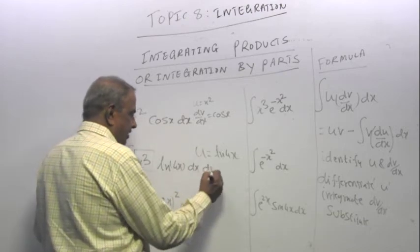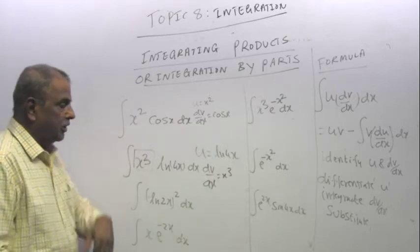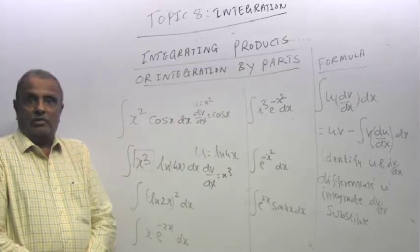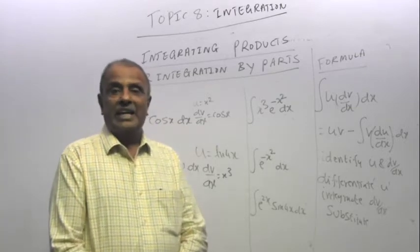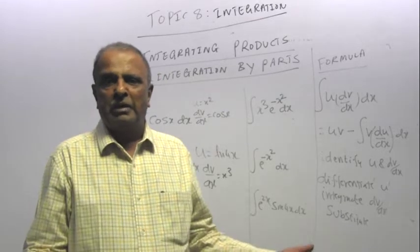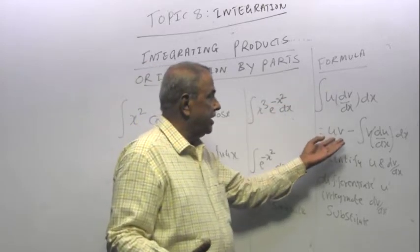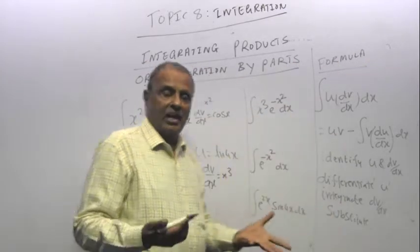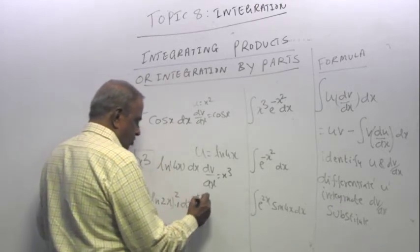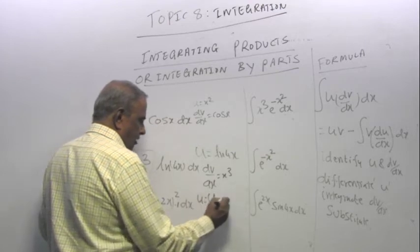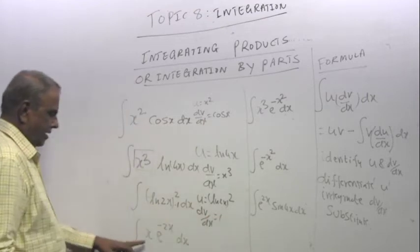So if you cannot integrate, then your u has to be, remember in the beginning of integration I told you, you can differentiate anything, but you cannot integrate any function. There are functions that are not integrable at all. So your dv/dx is x cubed. Here you only have one function, ln 2x of whole squared. I cannot integrate ln 2x, so I have to differentiate.